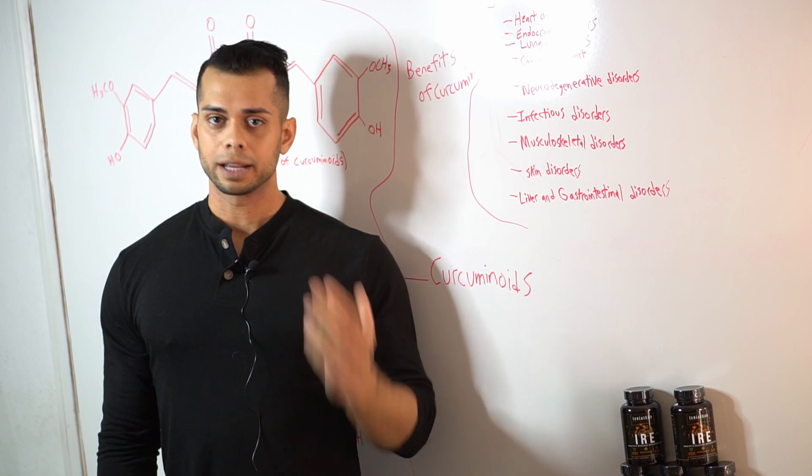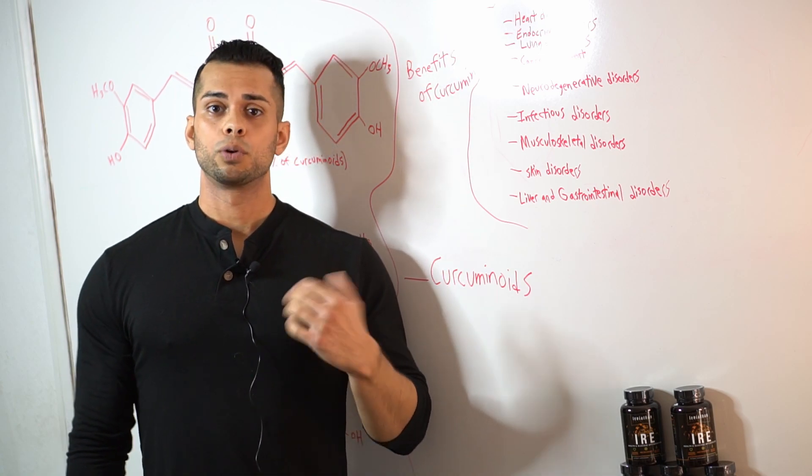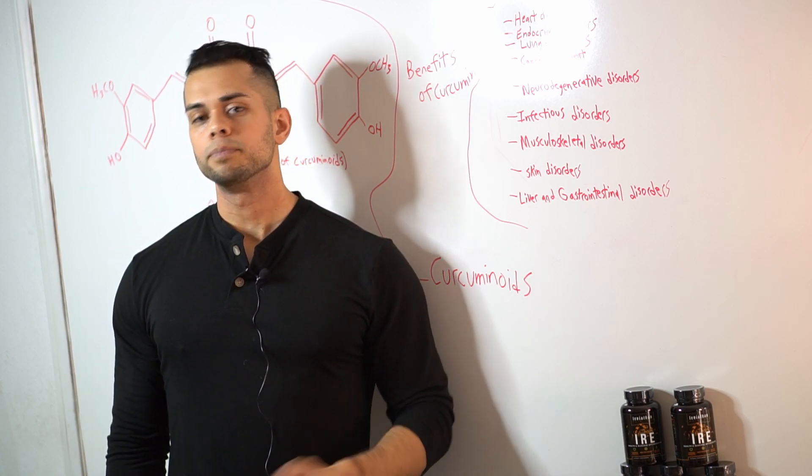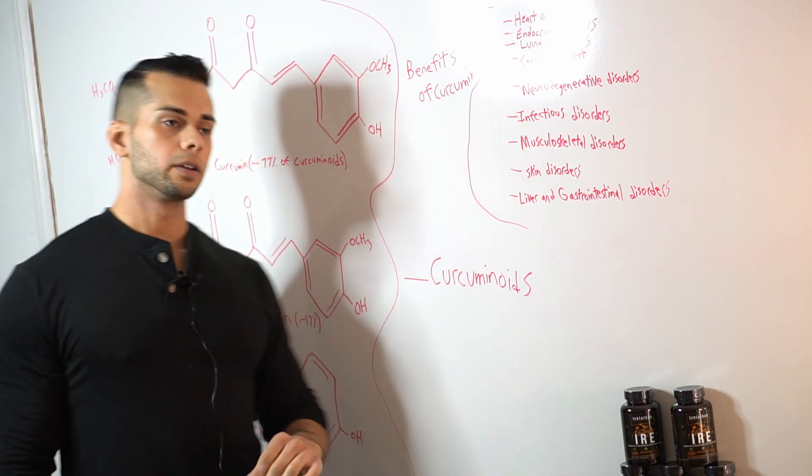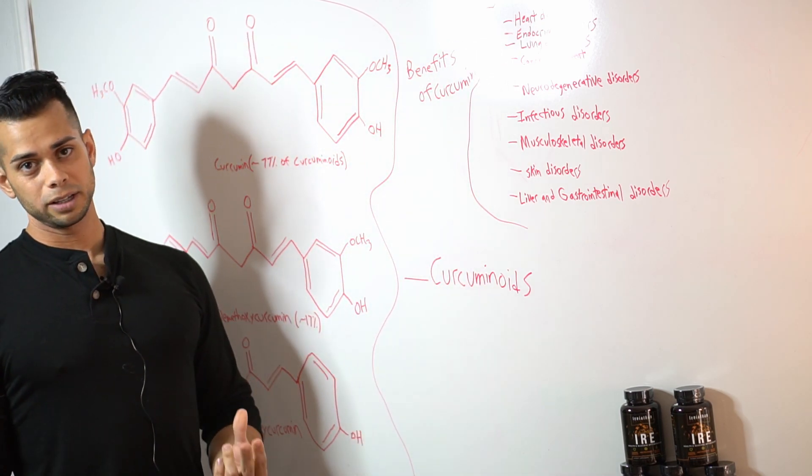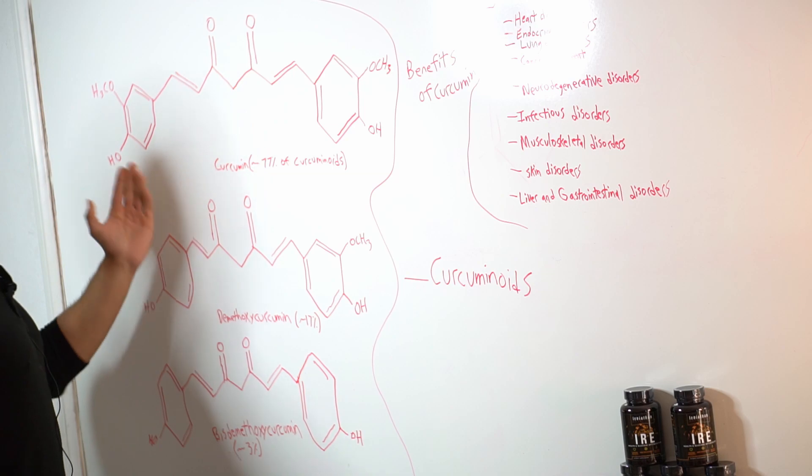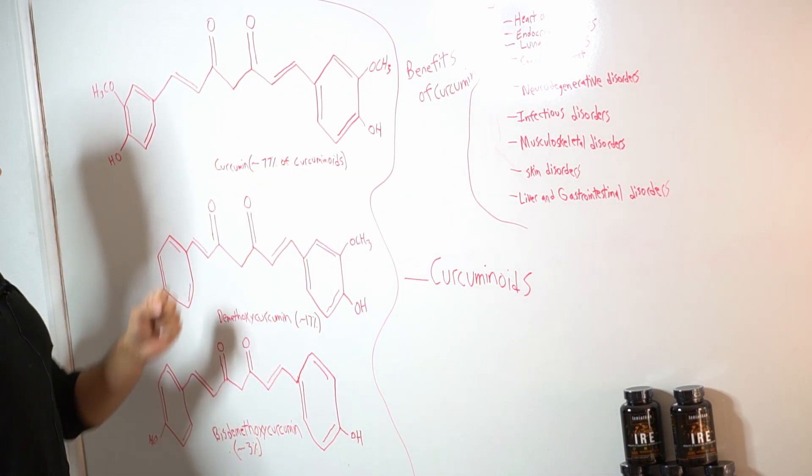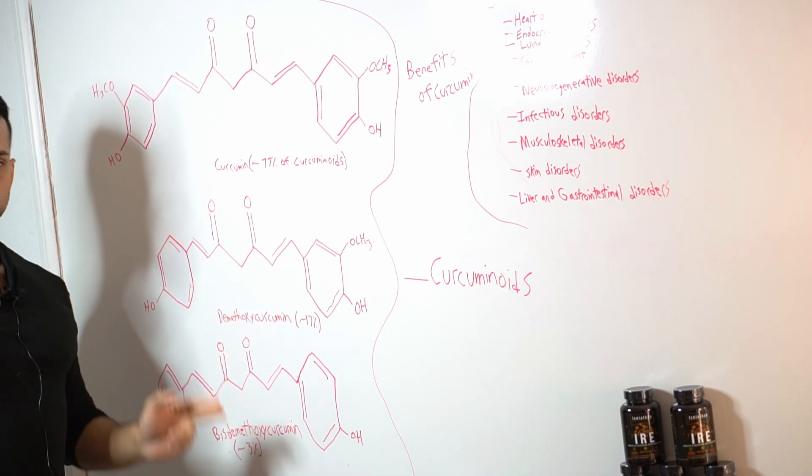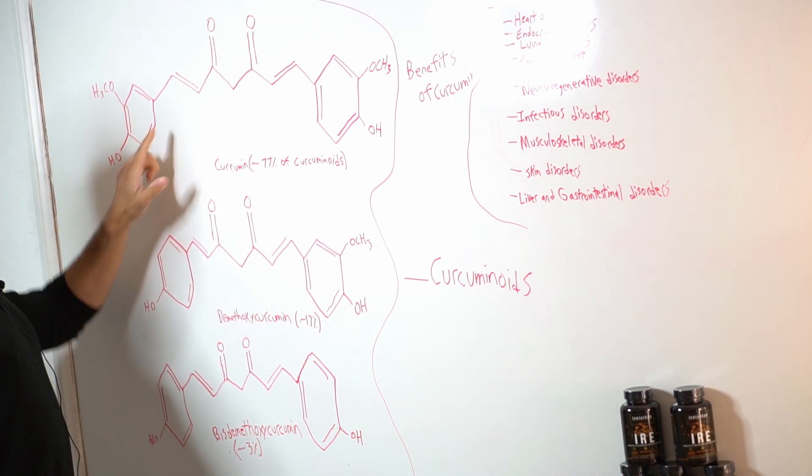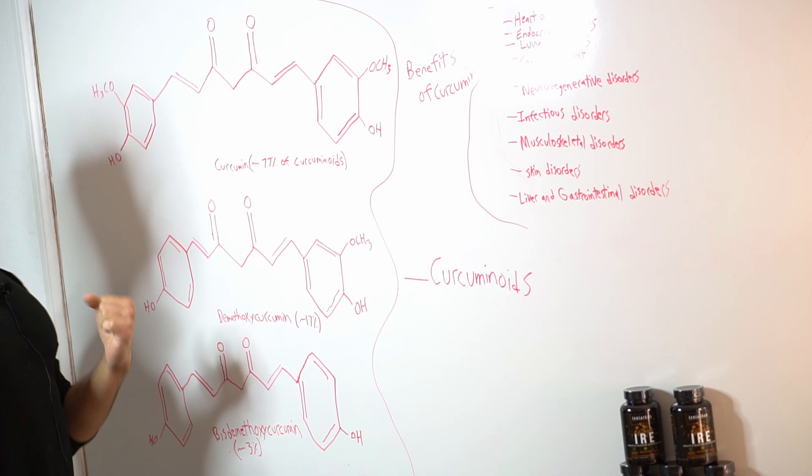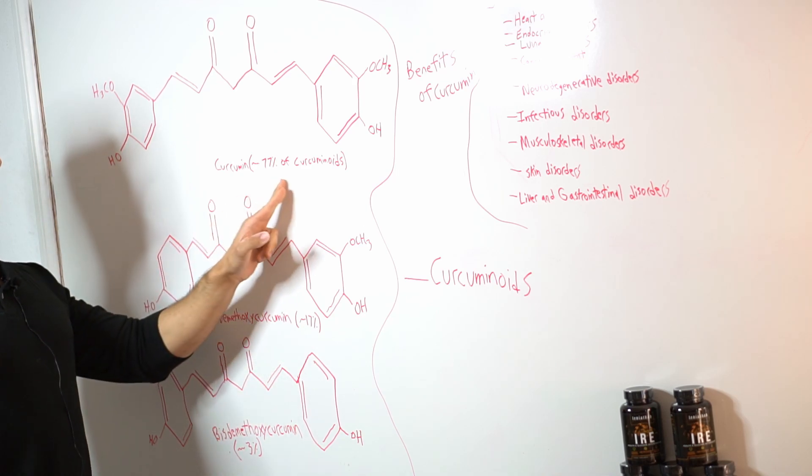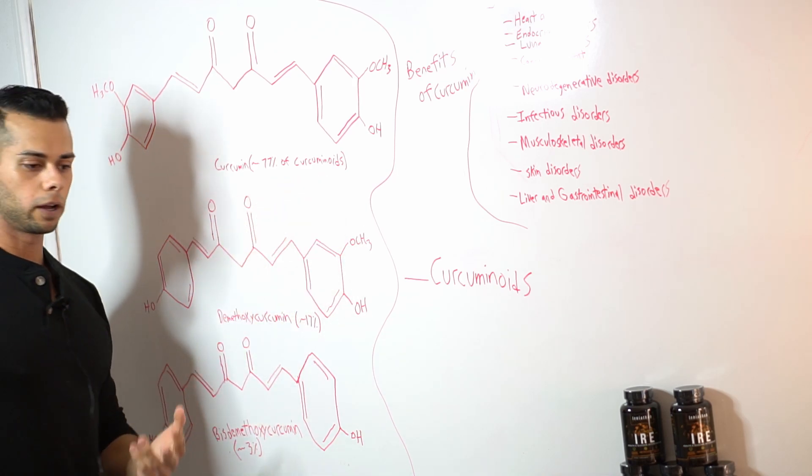So before we get into that I'm gonna give a quick overview of curcumin because curcumin is part of the family known as curcuminoids where curcumin is this structure right here and the curcuminoids consist of three different compounds. So curcumin is the first one up here and it consists of about 77% of the total profile of curcuminoids.